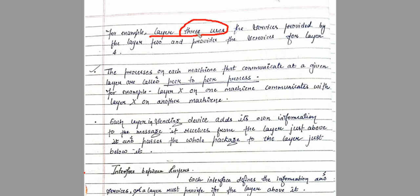On the receiver side, for example, layer 2 services go up to layer 3, and layer 3 provides services to layer 4. In this way, each layer uses the services of the layer below it and provides services to the layer above it. The processes on each machine that communicate at a given layer are called peer-to-peer processes.